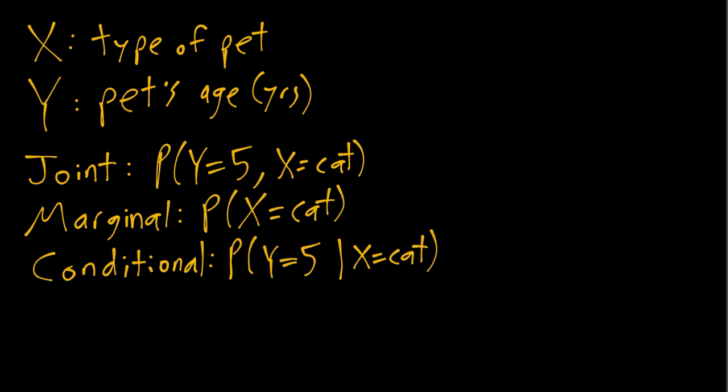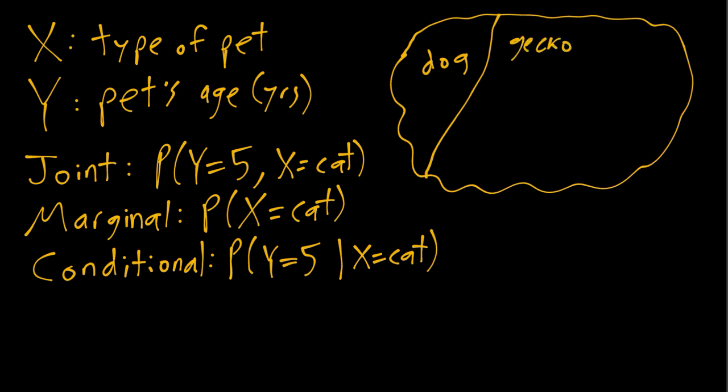So just to draw this first, we can imagine there's some population up here that contains all these different types of pets and of different ages. So we have some dogs over here, some geckos over here, and so on. We'll make cat big just so that I can draw some other stuff inside it. So this is the cat portion, this is something else.